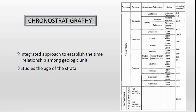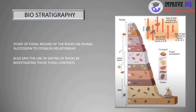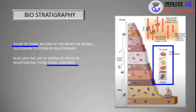The next one is biostratigraphy. It is the study of the fossil record of rocks based on faunal succession to establish relationships. It also involves dating of rock by investigating fossil contents. We can determine the age of a fossil by radioactive dating method. Similarly, arranging those fossils in a succession gives us data about the rock — that is what we call biostratigraphy.